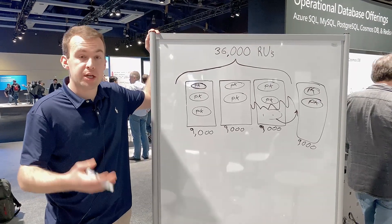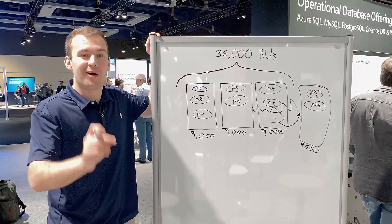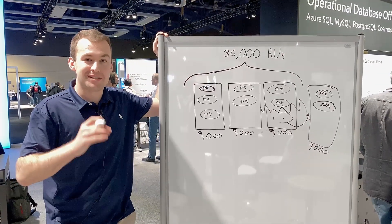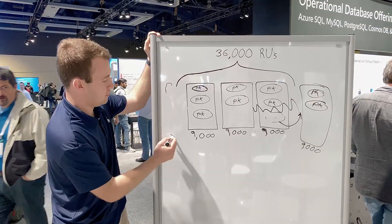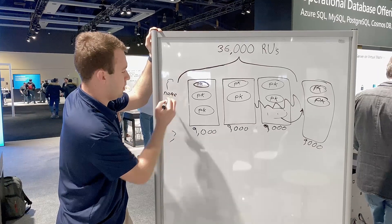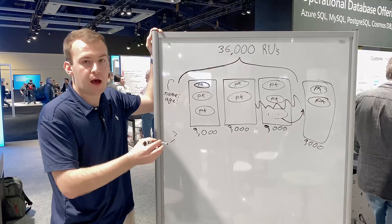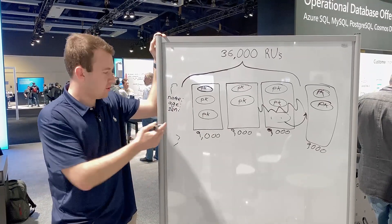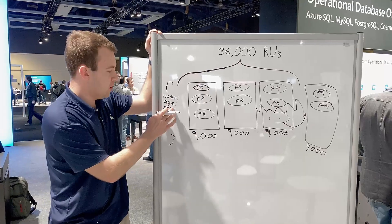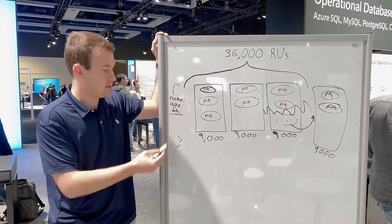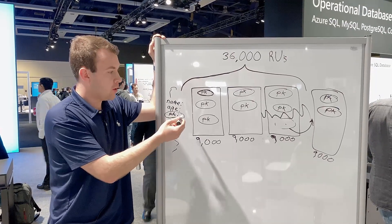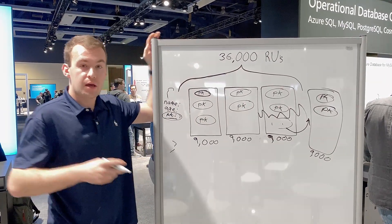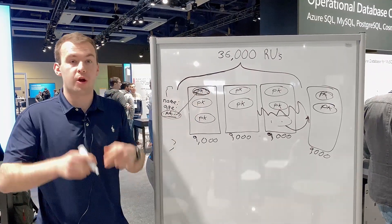Your partition key is basically just a property in your document that you designate to be the deciding factor in how your data is stored. For example, imagine I have a Cosmos DB container with data about attendees at this Microsoft conference. Attendees could have names, ages, and social security numbers — a unique identifier per person. We could use this unique identifier as the partition key for each person — we'll just call it PK. Based on this PK value in the document, we basically decide which document is stored on which physical partition.